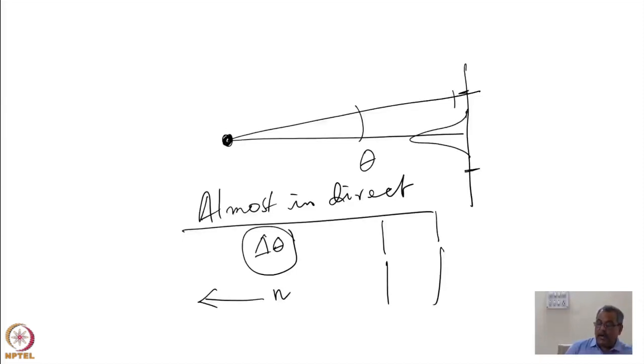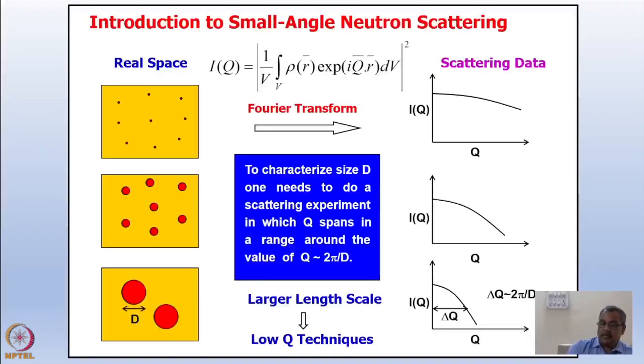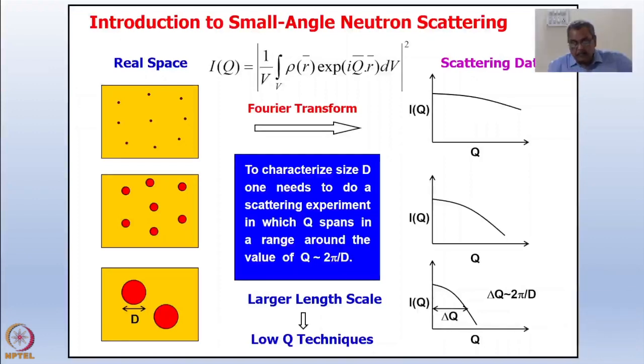So, you use a highly collimated beam in case of small angle neutron scattering and then you are doing the experiment almost at the direct beam path, in the direct beam path. Quick look to the findings that you can see schematically.